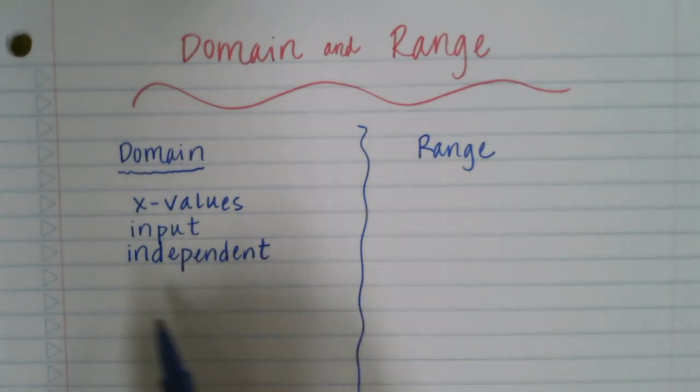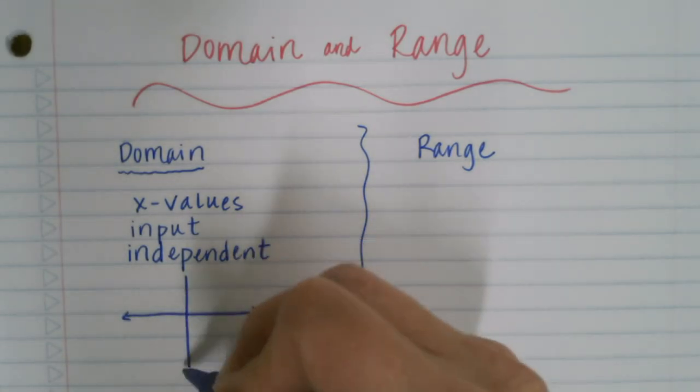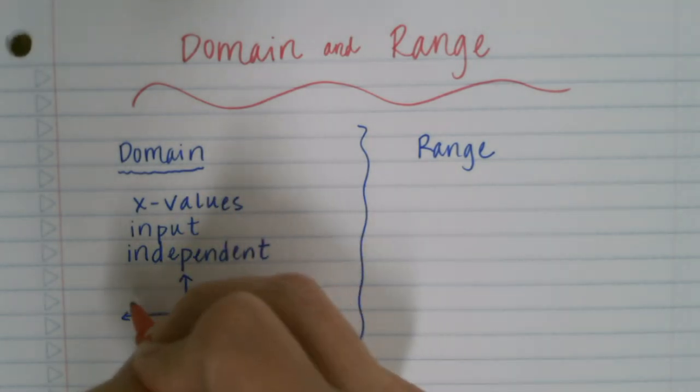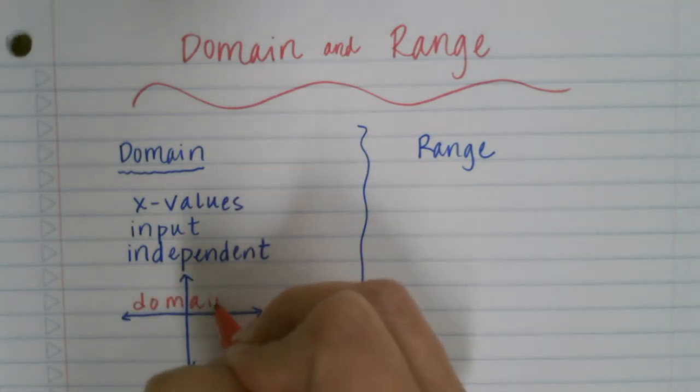When we're on a graph, our domain is the x-axis, so this right here is our domain.